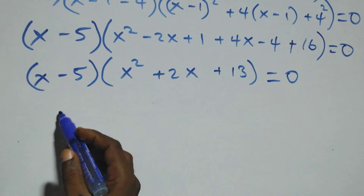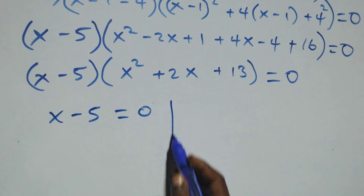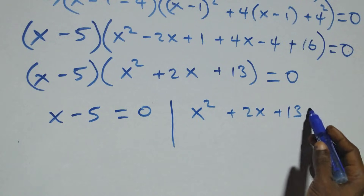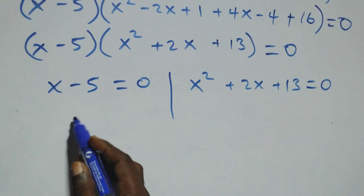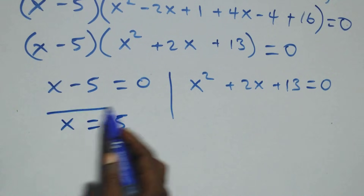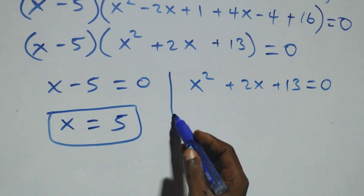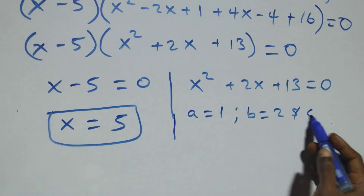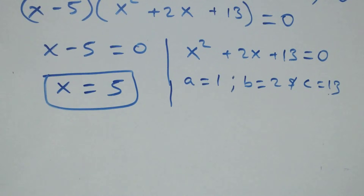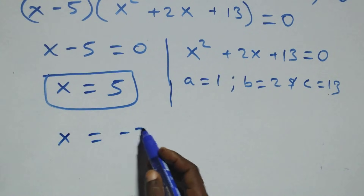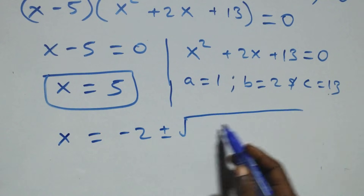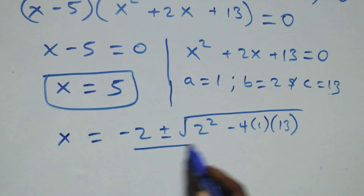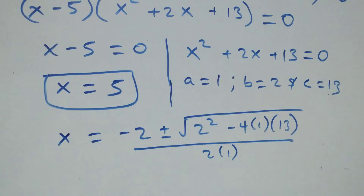We have two possible cases: x minus 5 equals to 0, or x squared plus 2x plus 13 equals to 0. The first gives x equals to 5, which is a real solution. For the quadratic, a equals 1, b equals 2, and c equals 13. Applying the quadratic formula: x equals to minus 2 plus or minus square root of 2 squared minus 4 times 1 times 13, over 2 times 1.